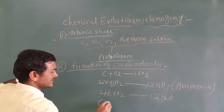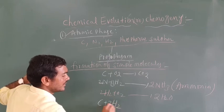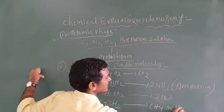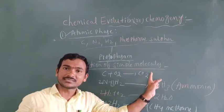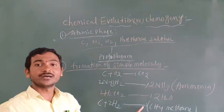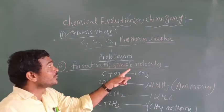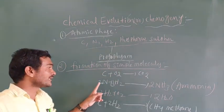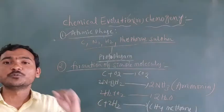Carbon is combined with hydrogen to form methane (CH₄). So the simple molecules formed are carbon dioxide, ammonia, water, and methane. These simple molecules are originated from the atoms — carbon, hydrogen, and nitrogen — coming together to form simple molecules.